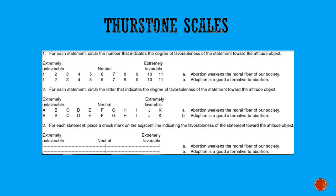From that list, you select a sampling of statements that people have some agreement on. So if everybody agrees that it's a neutral statement, you pick that. If everybody agrees it's very positive or very negative, you pick those. Each one of these then has an average value ranging from one to eleven, based on the scores that previous subjects have given to it. Now you're ready to administer your Thurstone scale measure of attitudes.